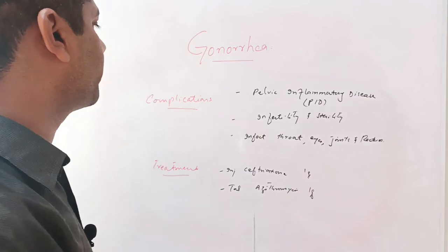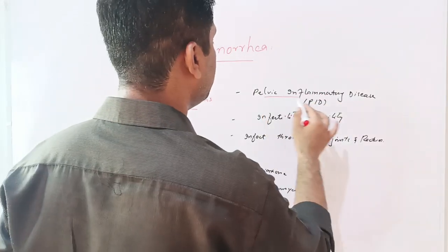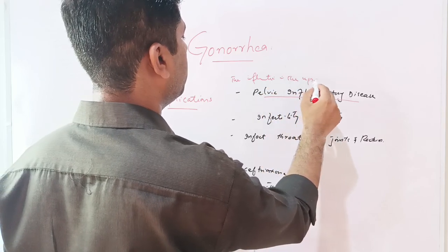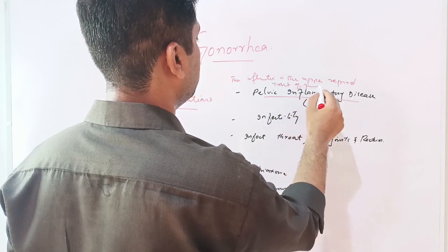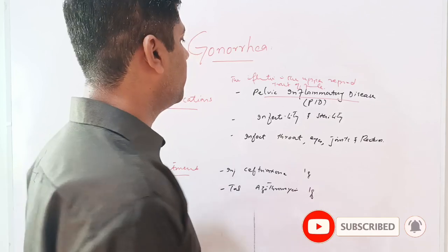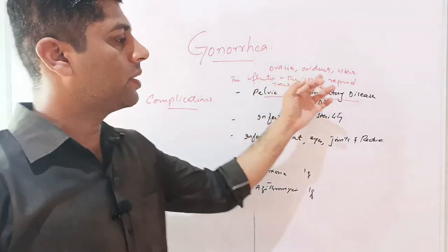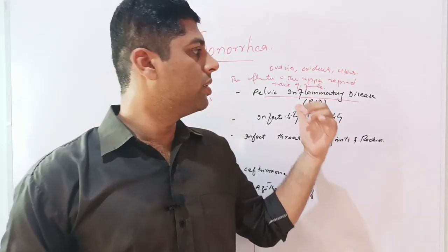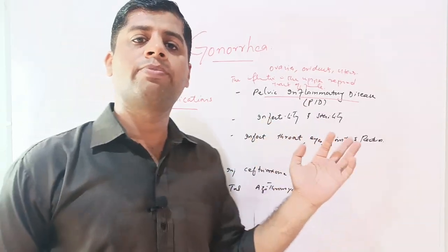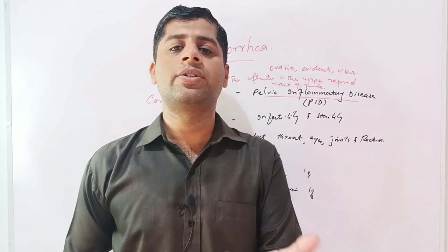If the disease is left untreated, it may cause complications. The most important and common complication is pelvic inflammatory disease (PID), seen in women. PID is defined as inflammation of the upper reproductive tract of the female, including the ovaries, oviducts, and uterus. It causes abdominal discomfort, abdominal pain, and also infertility and sterility. Infertility is the temporary loss of production of fertile ova, while sterility is the permanent and complete loss of the ability to produce offspring.